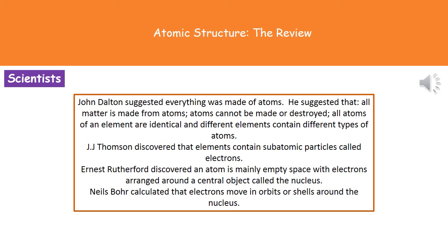And finally, Bohr actually worked out that those electrons move in orbits or shells around the nucleus. So do remember those four scientists in order: Dalton, Thompson, Rutherford, and Bohr, and a quite simple version of what they actually discovered as well.